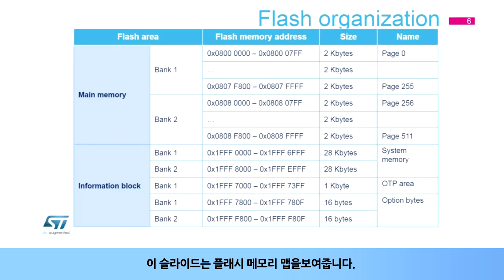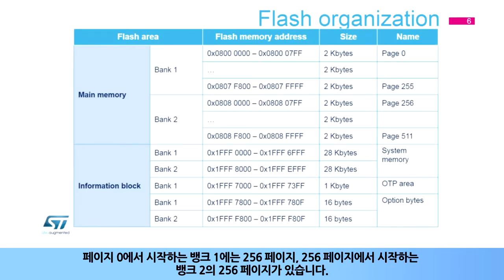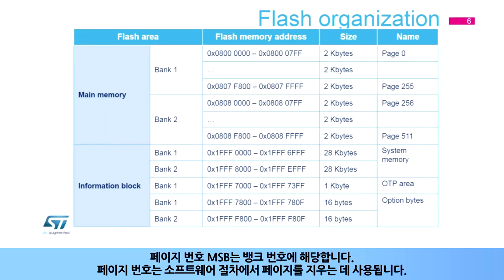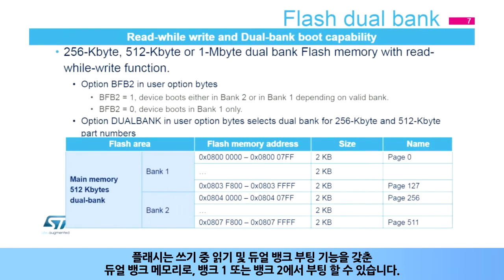This slide shows the flash memory map. There are 256 pages in bank 1, starting from page 0, and 256 pages in bank 2, starting from page 256. The page number MSB corresponds to the bank number. The page number is used in the software procedure to erase a page. The flash is dual bank memory with read-while-write and dual bank boot capability, able to boot from either bank 1 or bank 2.